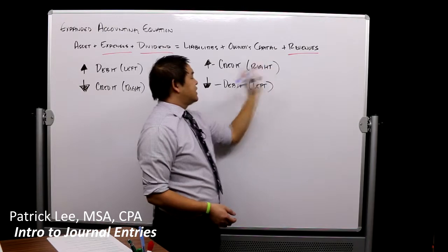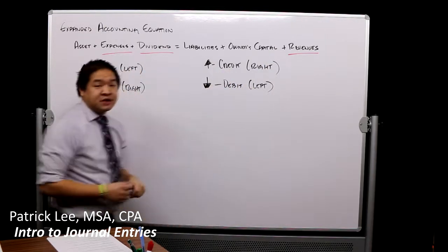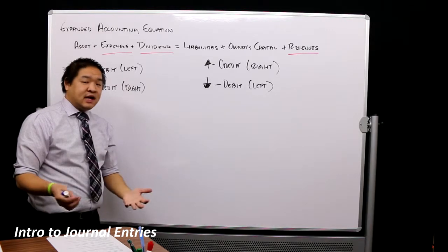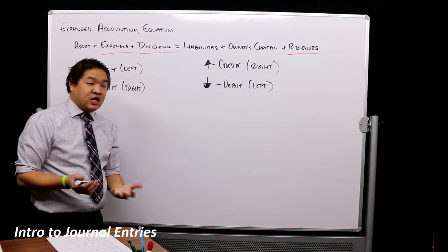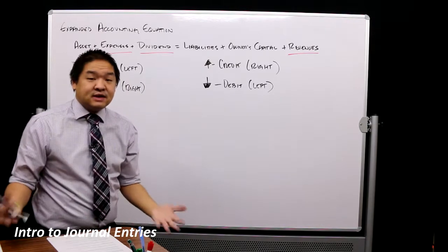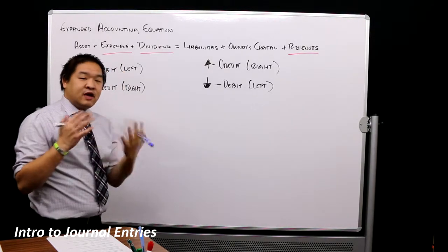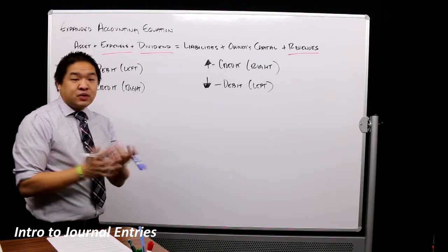Liability, owner's capital, and revenue increases are credits, decreases are debits. So that's how we learned them. We talked about the T accounts, we talked about how inefficient they are because we would have to have 50 or 60 of them if we had 60 accounts. So we have something called journal entries. Now, let me give you kind of what a journal entry would look like.